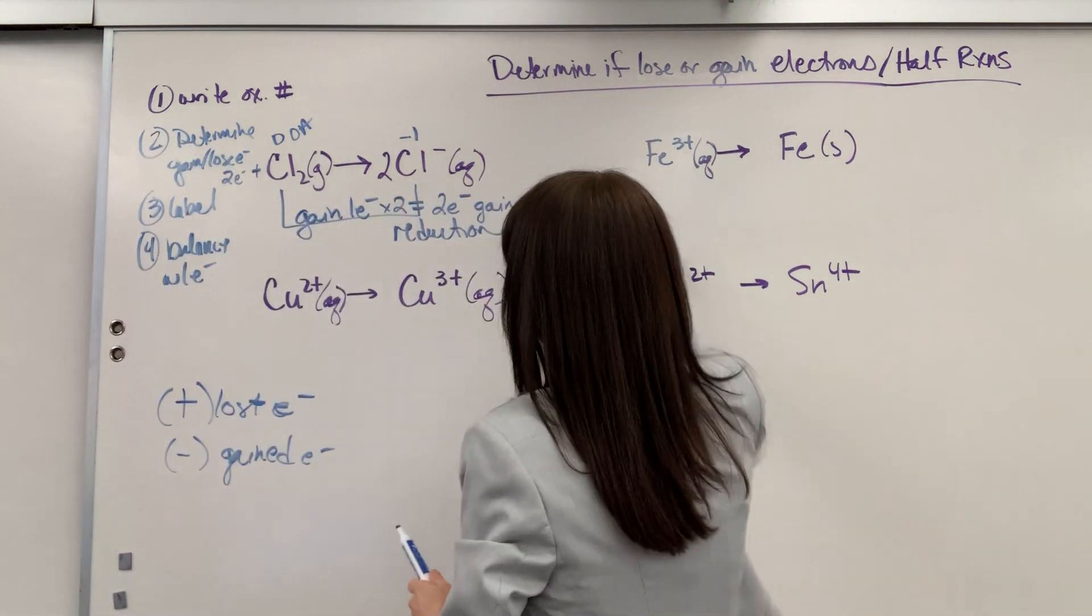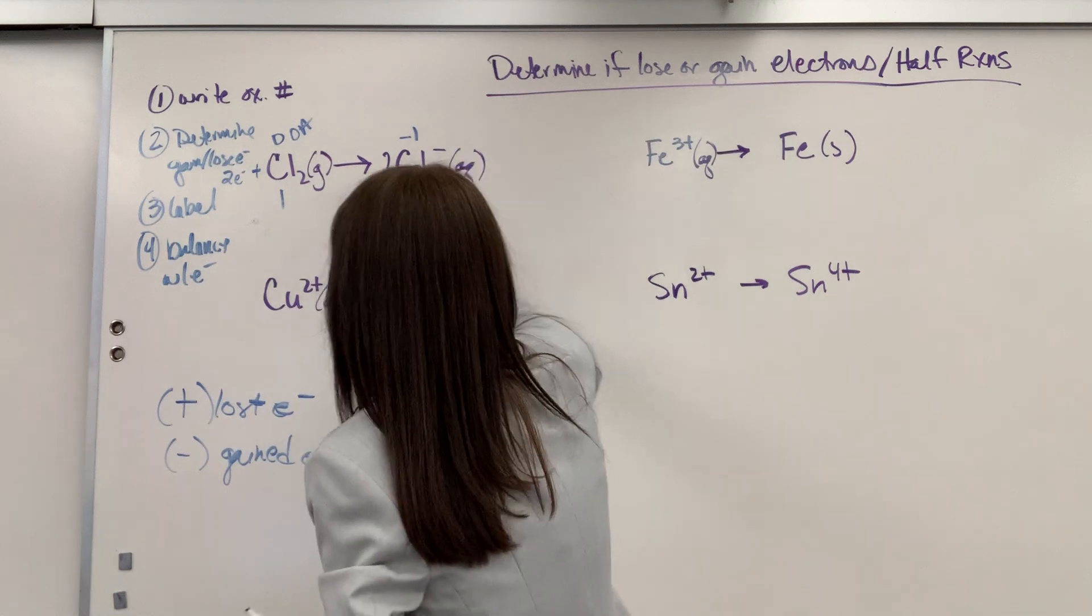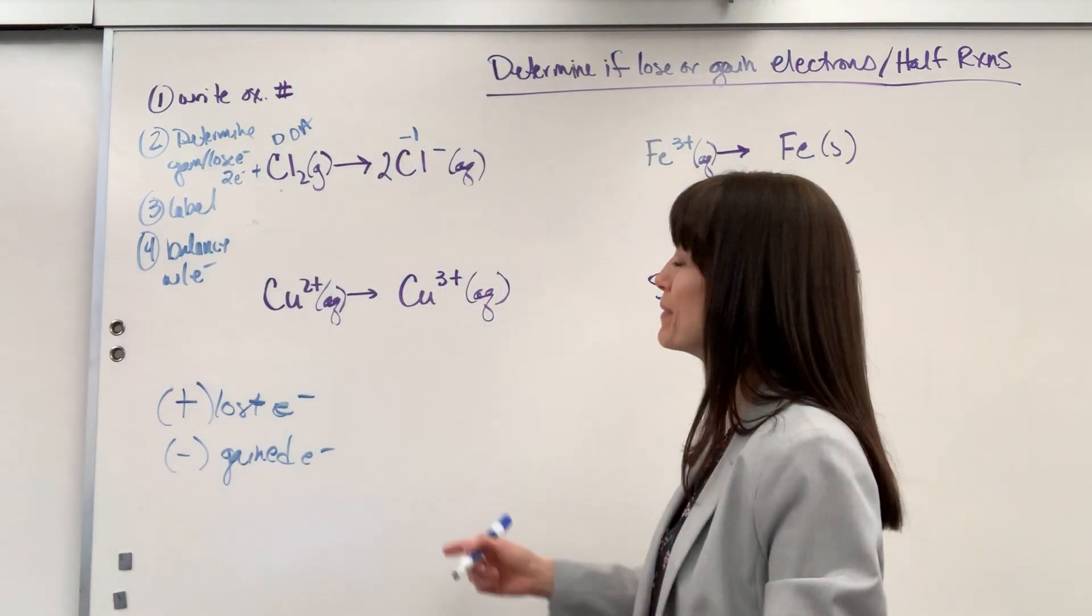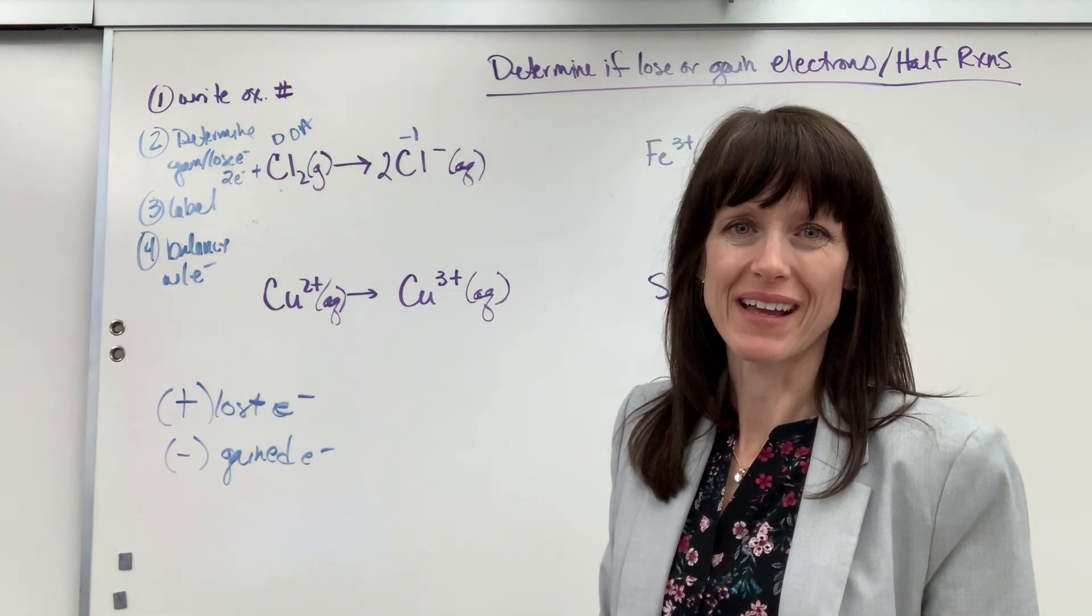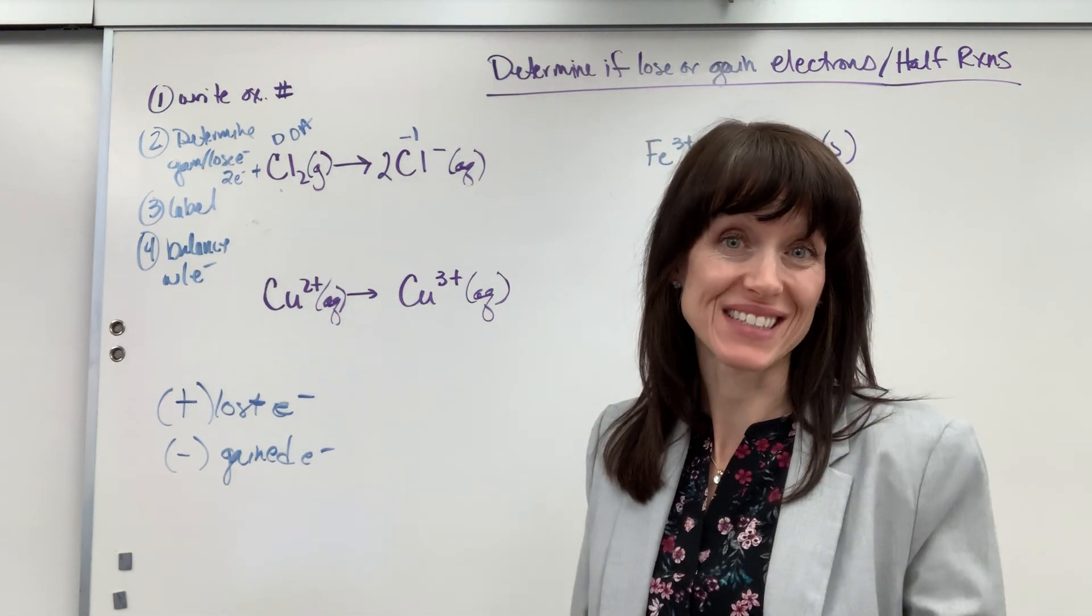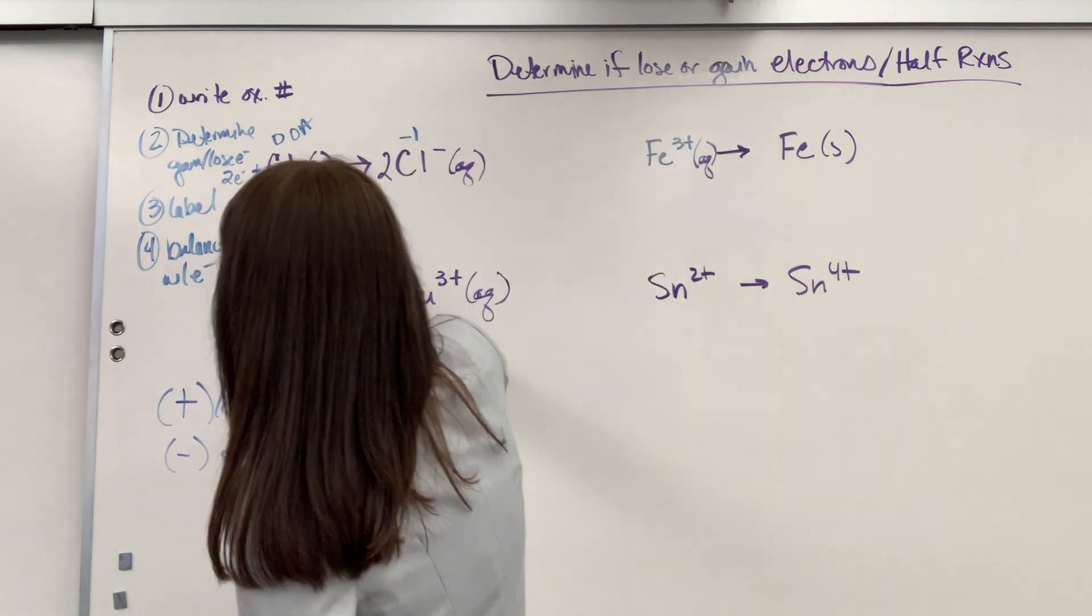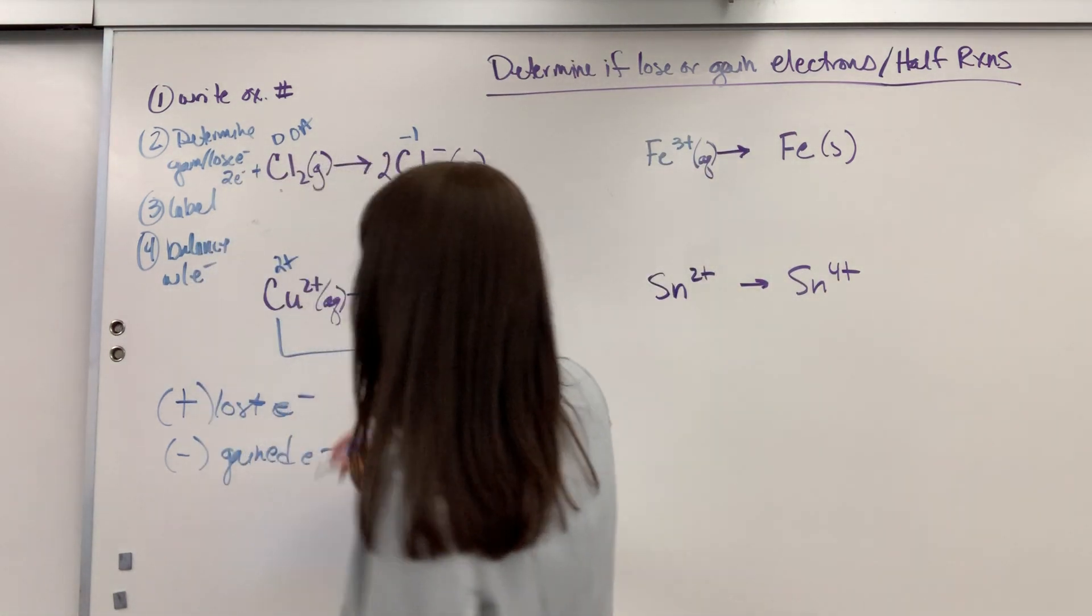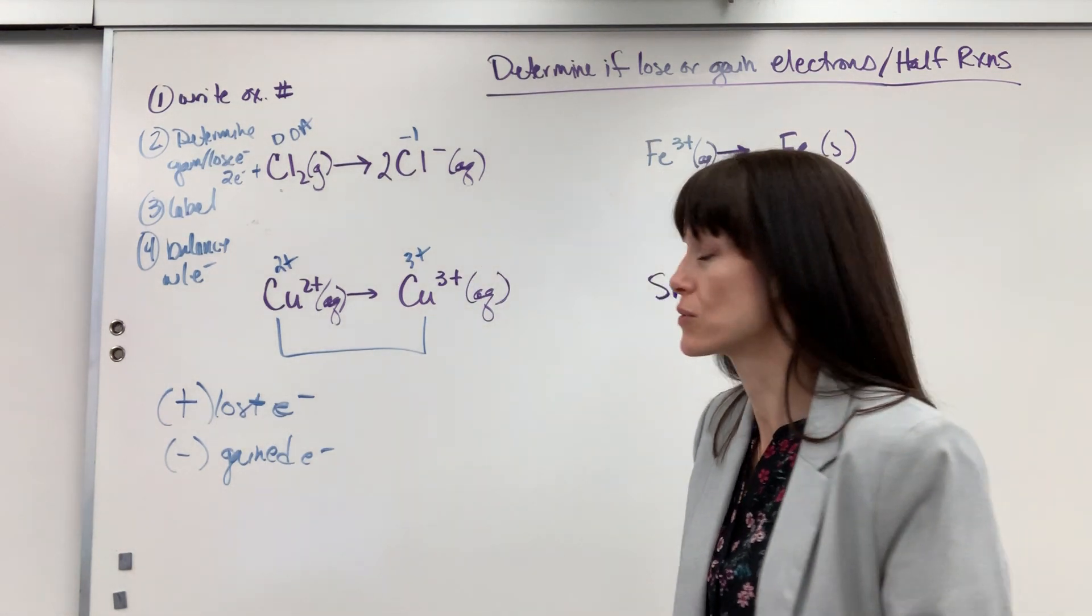Let's do this copper. I erase this just so we have a little bit more room. Okay, oxidation numbers. These are really easy because on a monoatomic ion, so one atom with a charge, whatever the charge is, that's the oxidation number. So we're going to have a two plus and a three plus. Do our bracket and then figuring out, did we gain or lose electrons?